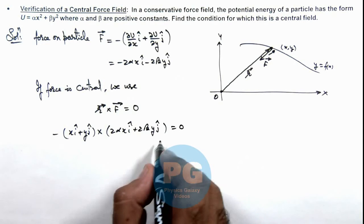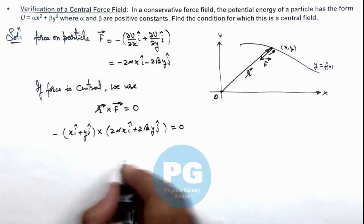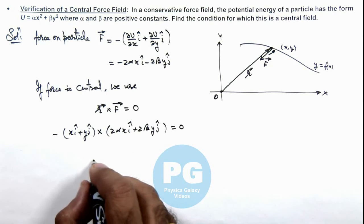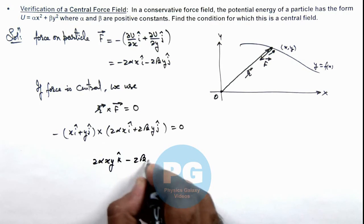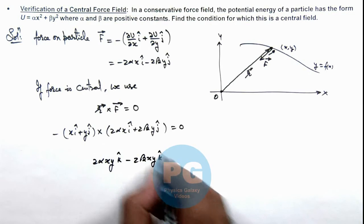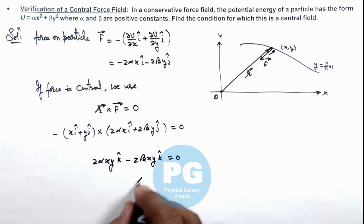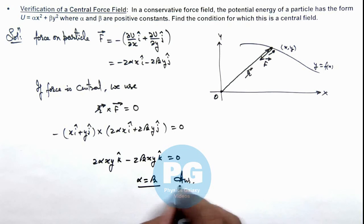On simplifying this cross product, we get 2αxy k̂ - 2βxy k̂ = 0. This is possible only when α = β. That is the final result - the condition under which r × F = 0 and the force field can be taken as a central force field.